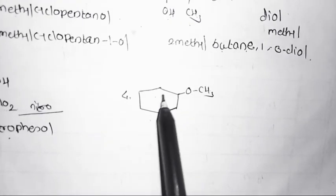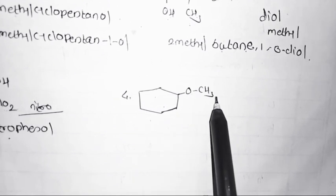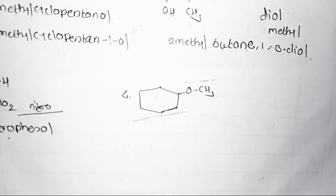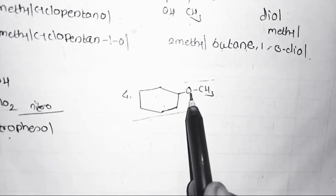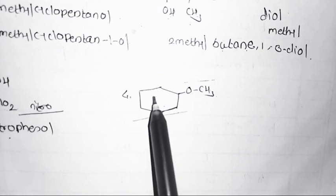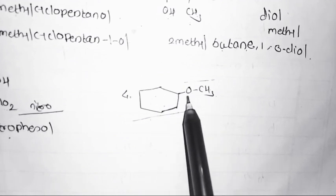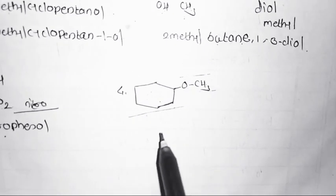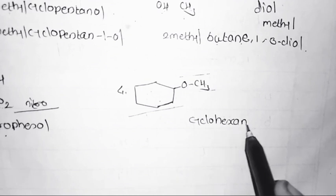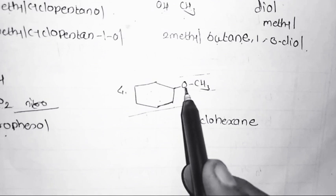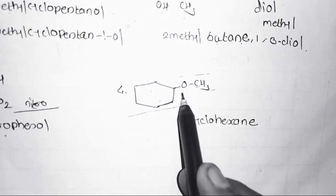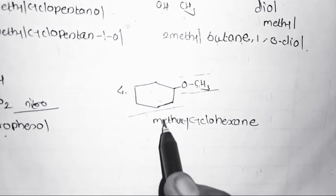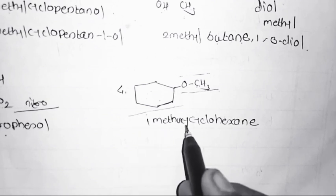Fourth structure: cyclohexane with an attached OCH3 group (methoxy group). In IUPAC naming of ethers, the largest carbon chain is the parent alkane and the lowest carbon group is the alkoxy group. Cyclohexane has the largest number of carbons, so it is the parent chain. OCH3 is the methoxy group (lower carbon count). IUPAC name: methoxycyclohexane (or 1-methoxycyclohexane).